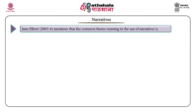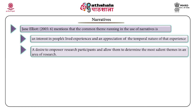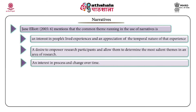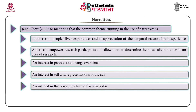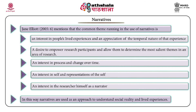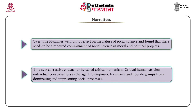Jane Elliott mentions that the common themes running through the use of narratives are: (a) an interest in people's lived experiences and an appreciation of the temporal nature of that experience, (b) a desire to empower research participants and allow them to determine the most salient themes in an area of research, (c) an interest in process and change over time, (d) an interest in self and representations of the self, and (e) an interest in the researcher himself as a narrator. In this way, narratives are used as an approach to understand social reality and lived experiences. Over time, Plummer went on to reflect on the nature of social science and found that there needs to be a renewed commitment of social science in moral and political projects. This new corrective endeavor he called critical humanism.